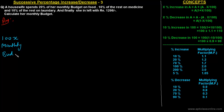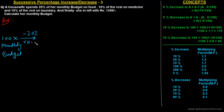The monthly budget is 100x. Now it is given that she spends 20% of her monthly budget on food, so out of 100x she spends 20% on food. Whatever she is left with can be found by multiplying with a suitable multiplying factor — that is 0.8. So she is left with 80x.